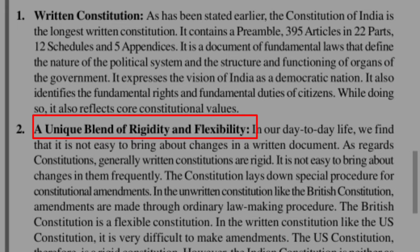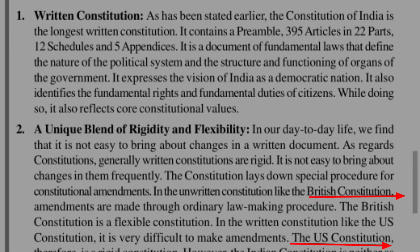The second point is a unique blend — a mixture of rigidity and flexibility. In the Indian Constitution, these two terms relate to the amendment procedure. It is rigid because certain laws cannot be changed easily and must pass through critical agreements. Other laws can be changed easily, making it flexible. India drew flexibility from the British Constitution and rigidity from the US Constitution, combining them into a blend of rigidity and flexibility.